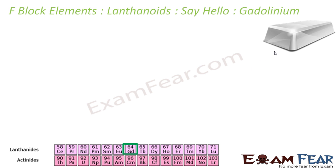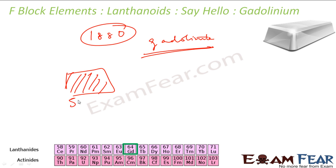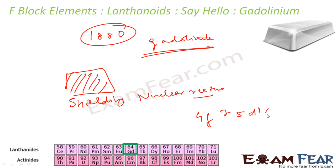Gadolinium is a silvery-white, malleable, ductile metal detected in 1880. It was named after the ore gadolinite from which it is found. It has six stable isotopes and one radioactive isotope. It is used for shielding in nuclear reactors and to prepare alloys resistant to high temperatures. Its electronic configuration is 4f⁷ 5d¹ 6s².